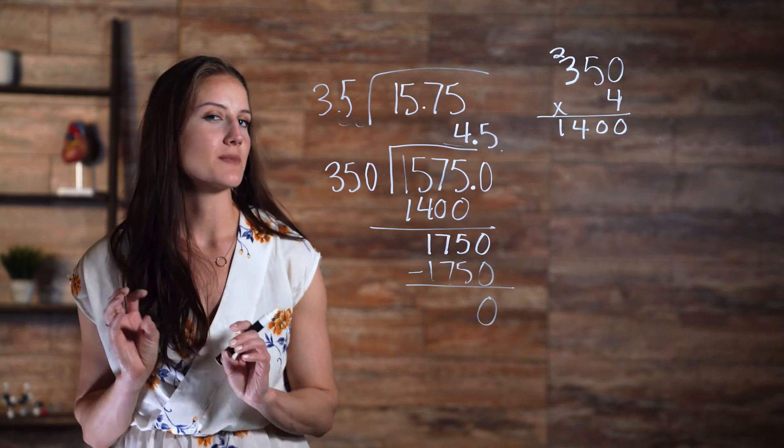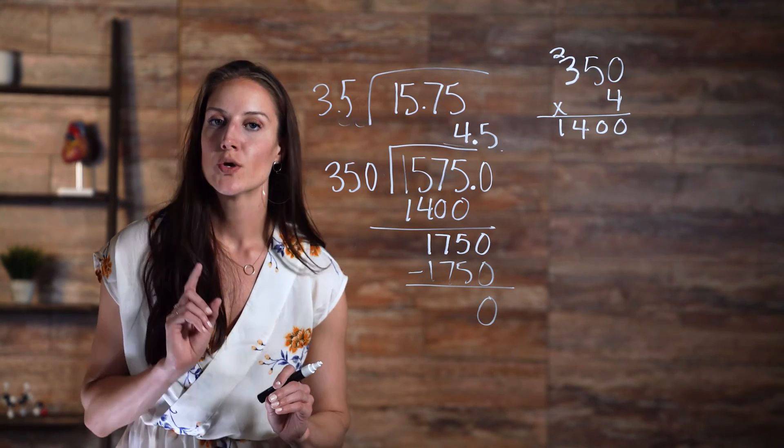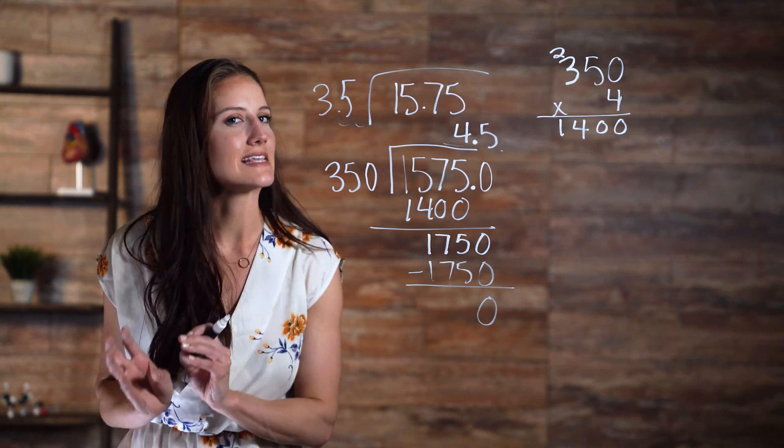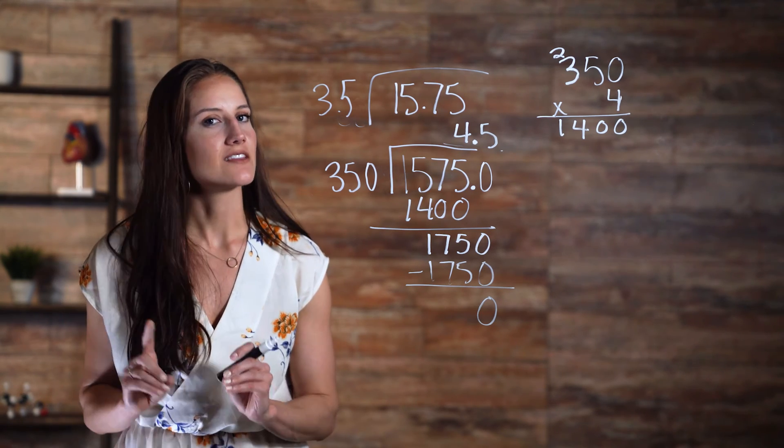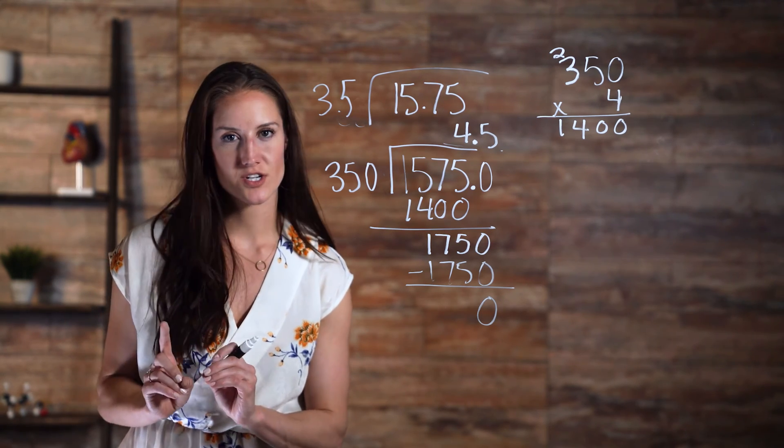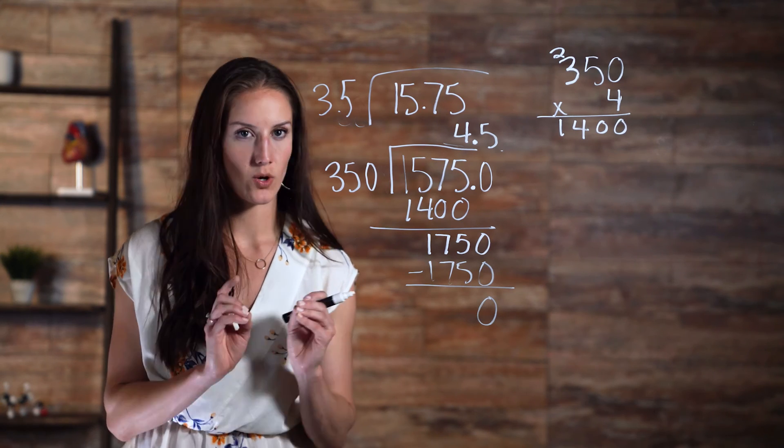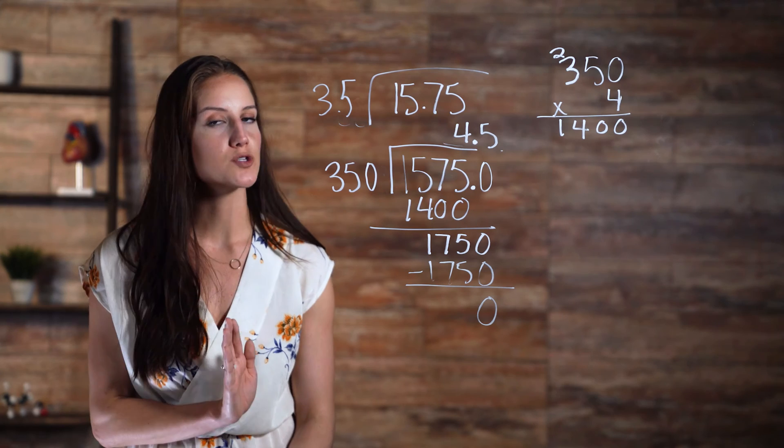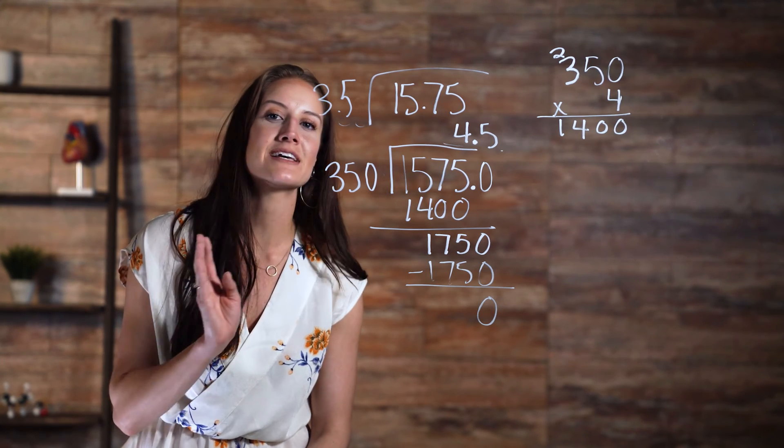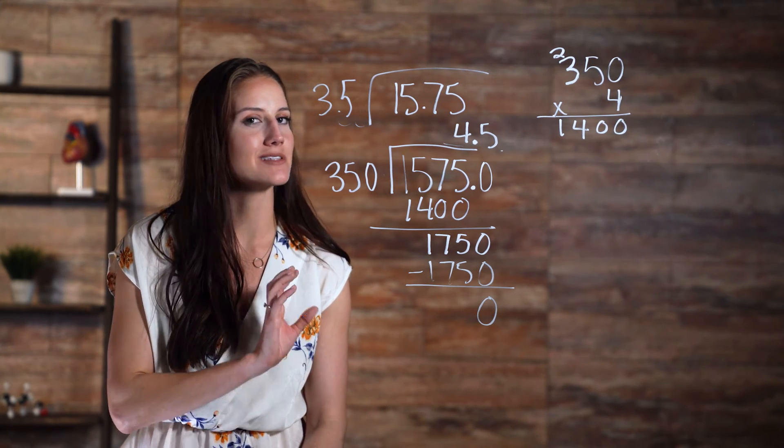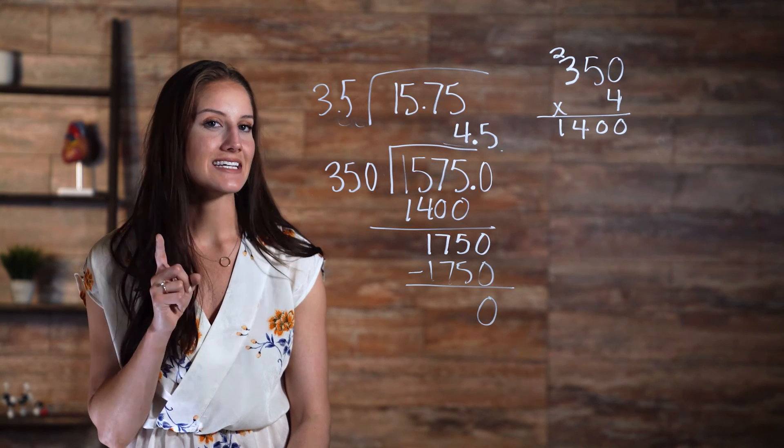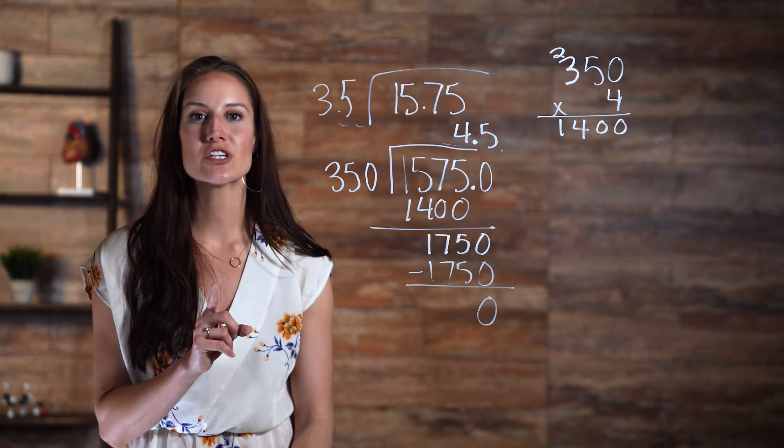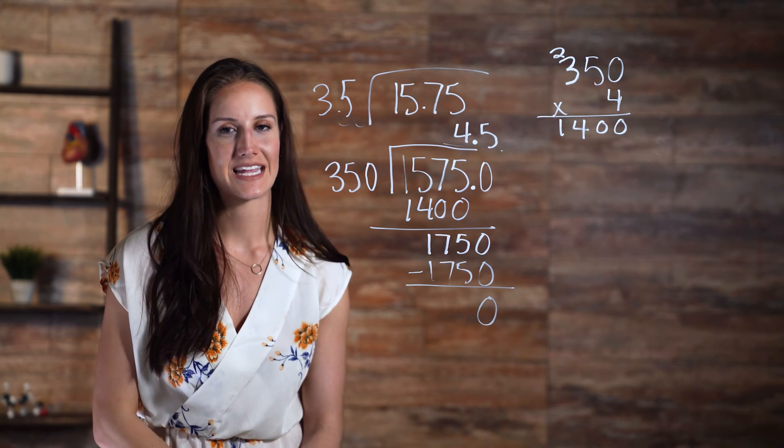While dividing decimals may have seemed daunting at first, remember that it is essentially the same as regular long division. Don't forget the strategy we discussed in order to turn our numbers with decimals into whole numbers. Multiply both numbers in the expression by a multiple of 10 to move the decimal point over as many times as necessary. Treat both numbers the exact same way, and you'll be sure to end up with the correct answer.